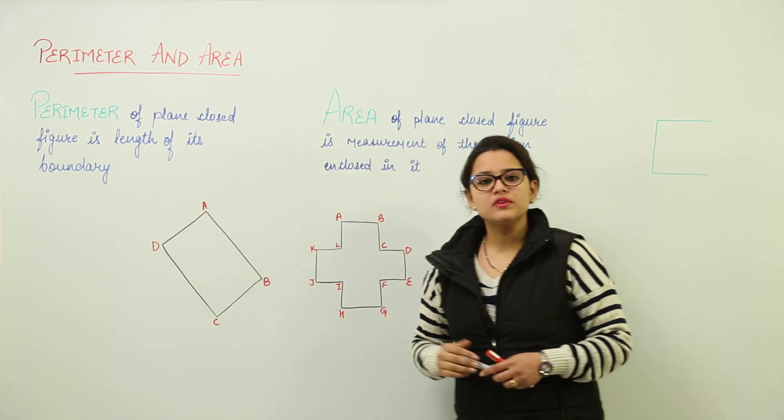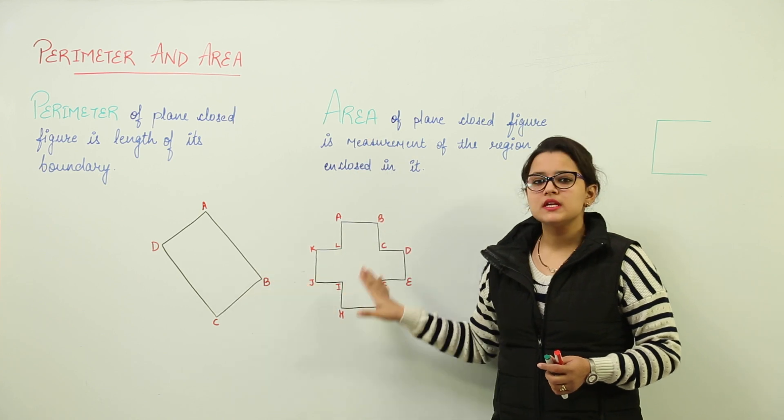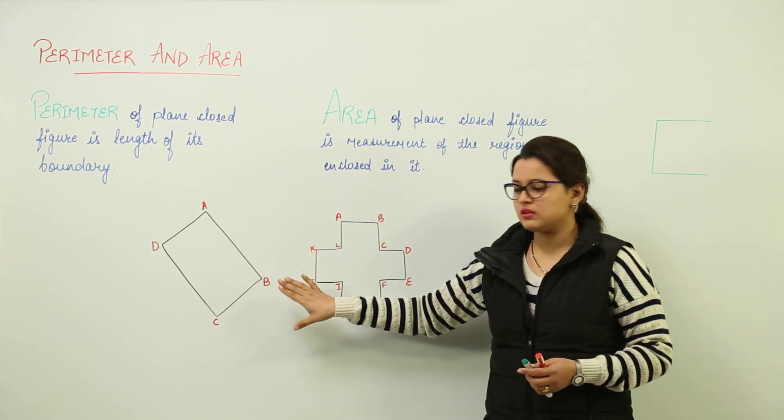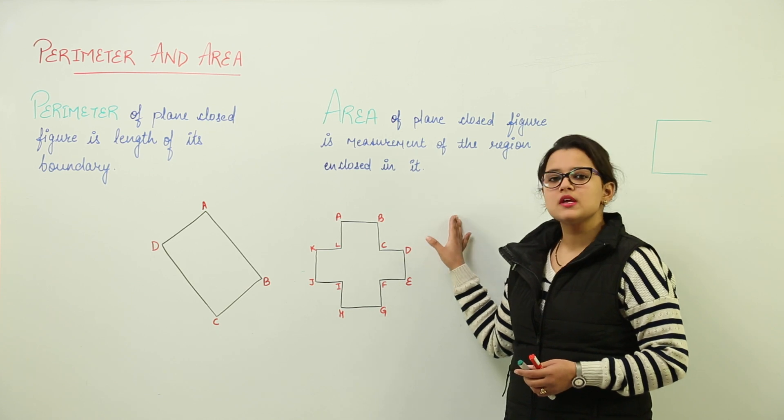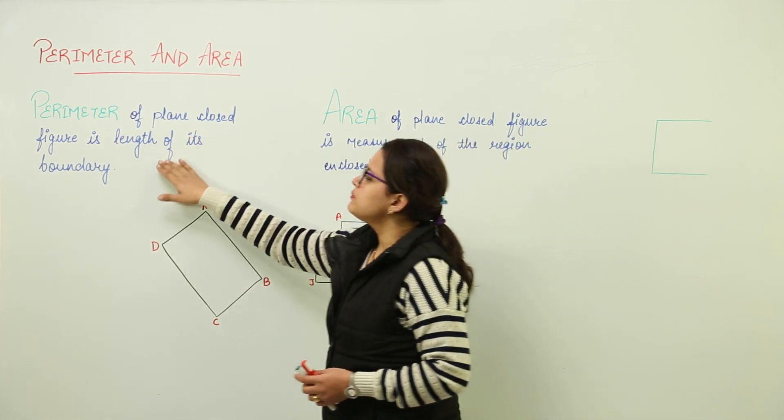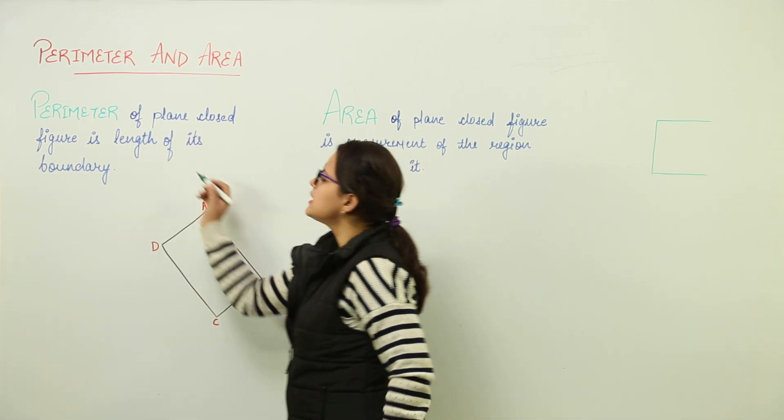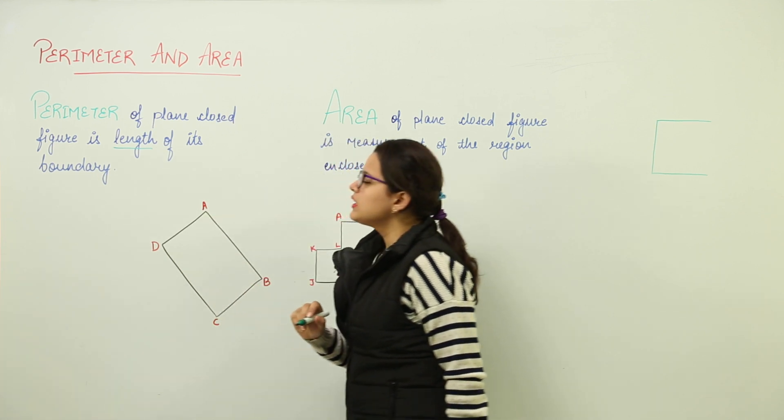That perimeter of a plane closed figure. Now, what do you mean by a plane figure? Plane means it lies on a plane only. For example, this board is representing a plane over here. So, all the shapes that we are going to draw on this will be our plane shapes only. So, perimeter of a plane closed figure is what? It is the length of its boundary.